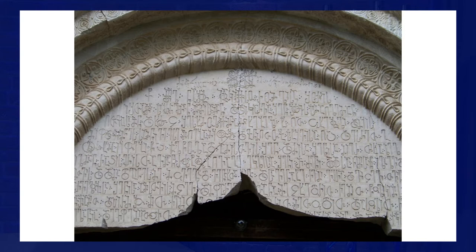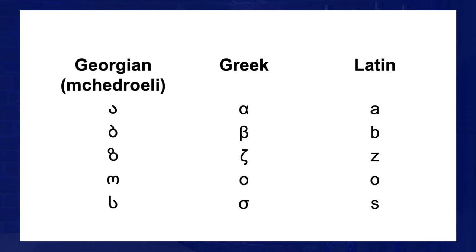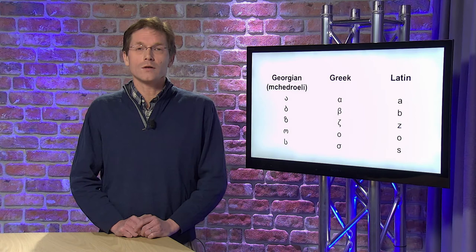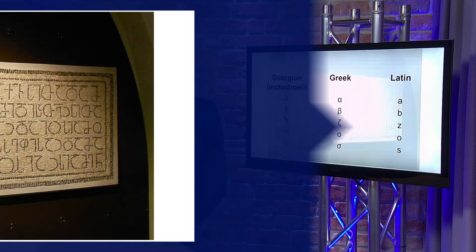The same is true for this poem. The Latin script is based on the Greek alphabet. Although the resemblance seems to be far away, this is also true for the Georgian alphabet. The order of the Georgian alphabet therefore largely corresponds to that of the Greek alphabet. For Georgian sounds that did not occur in Greek, extra letters have been designed and placed at the back of the alphabet. Thus the Georgian alphabet has a total of 33 letters.